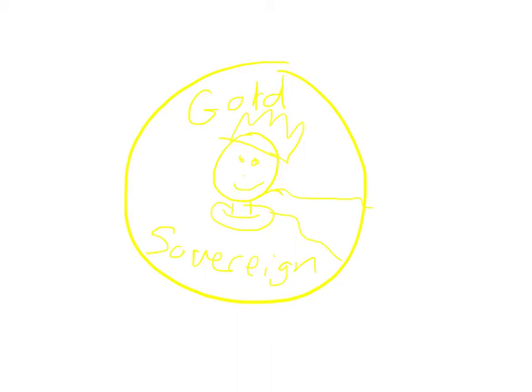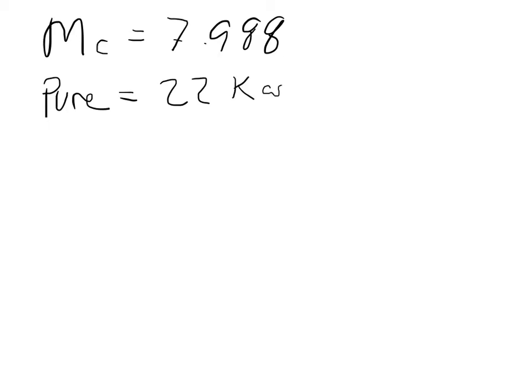Part B: Calculate the volumes of gold and copper respectively used to manufacture the coin. And Part C: Calculate the density of the British sovereign coin. So let's go ahead and write down what we have. We have the mass of the coin. So the coin's mass, the mass of the total coin is equal to 7.988 grams. And we know that its purity is equal to 22 karats.